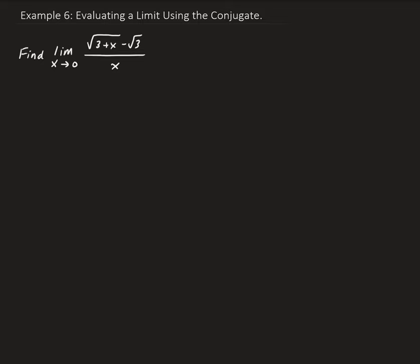In this example, we want to evaluate the limit of the function as x approaches 0. So let's first do a direct substitution. Replacing x with 0, we end up getting square root of 3 plus 0 minus square root 3, all divided by 0. So that gives us square root 3 minus square root 3 divided by 0, and so this gives us 0 over 0 — an indeterminate result.